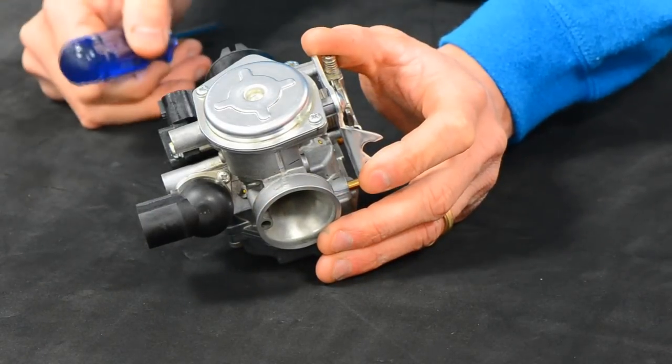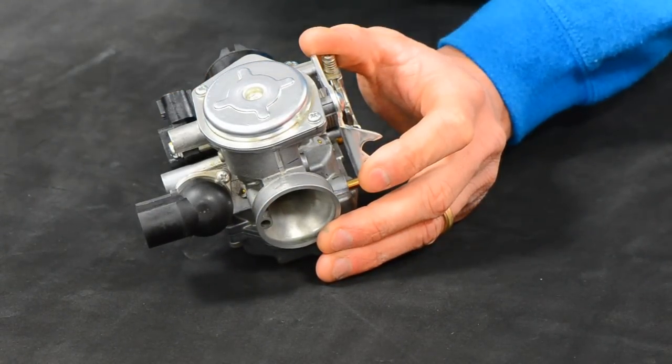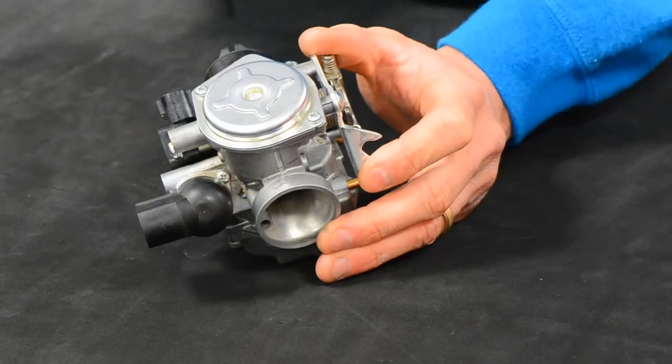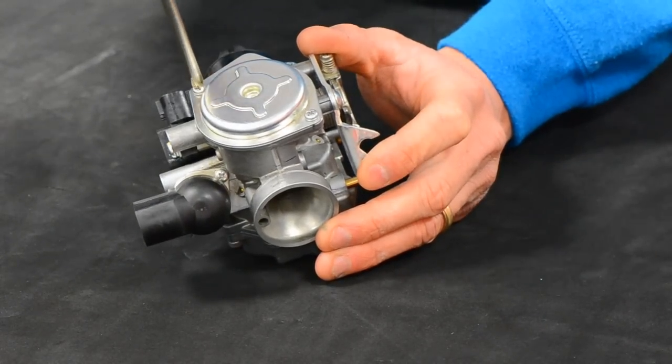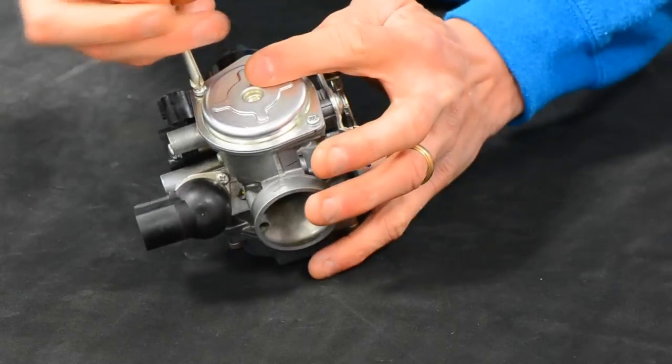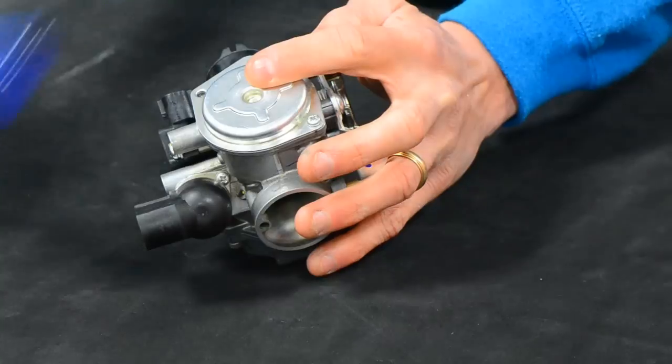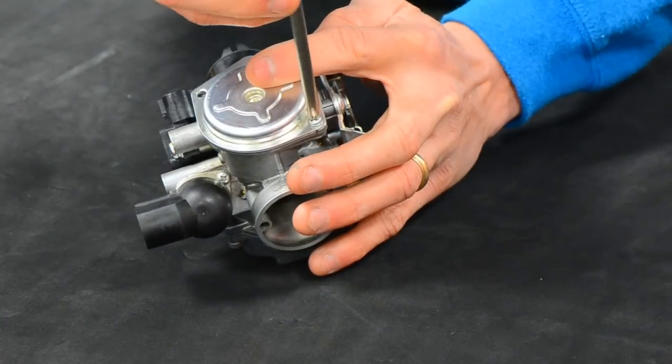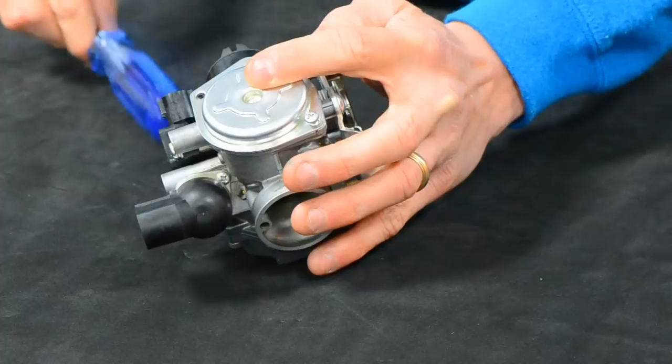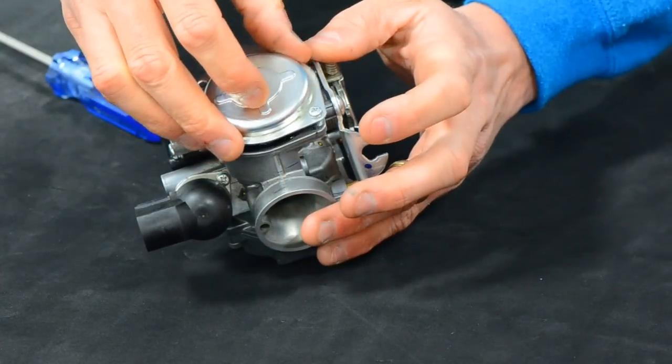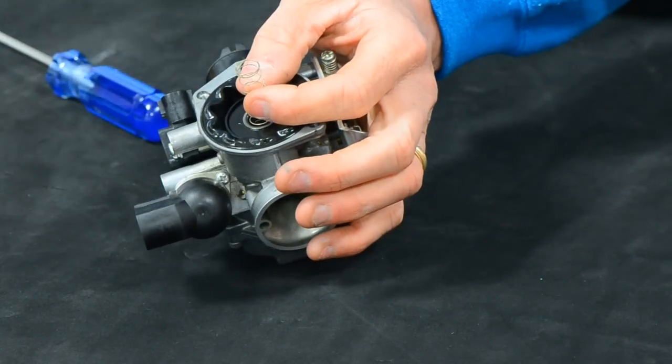We're going to go ahead and remove this carburetor cap, switch it for the billet piece. Again, this is not required in the jetting procedure whatsoever, just a cosmetic modification. Two stock Phillips heads here to remove. I'm going to hold down this cap because there's a spring there that has that a bit loaded. Ease that straight up. See the diaphragm and the spring. We'll just keep that there.